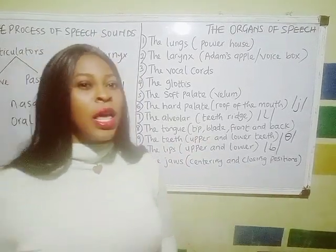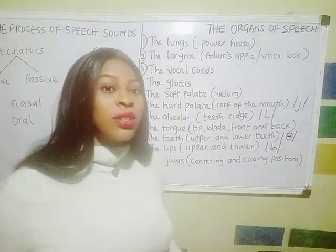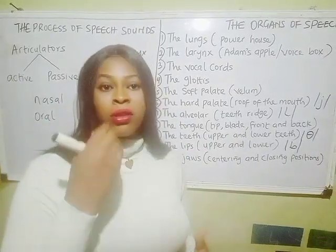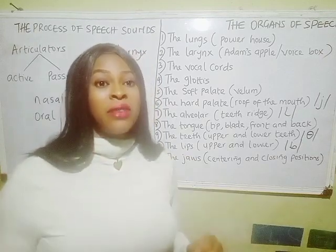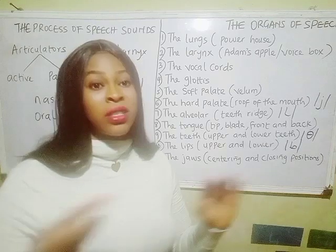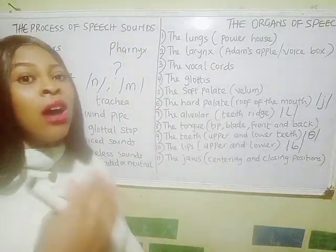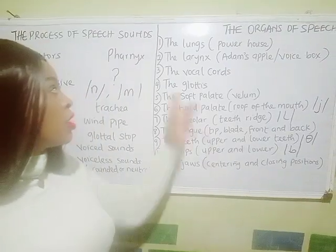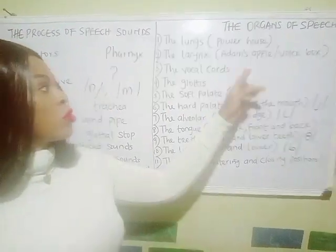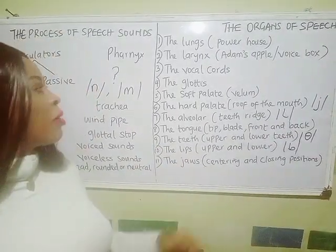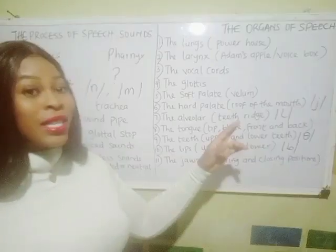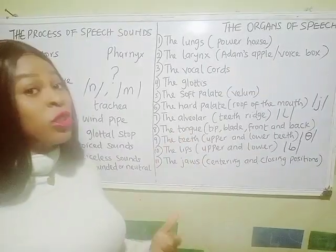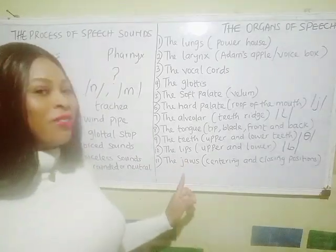Now let's recap all that we've covered. We looked at articulators — the active articulators such as the tongue and lips that move, and the passive articulators such as the hard palate which does not move. We looked at all the organs of speech and how air flows through to the articulators in the mouth: the lungs (powerhouse), the larynx (voice box) where air is modulated, the vocal cords, the glottis, the soft palate or velum, the hard palate (roof of the mouth), the alveolar, the tongue, the teeth, the lips, and the jaws.